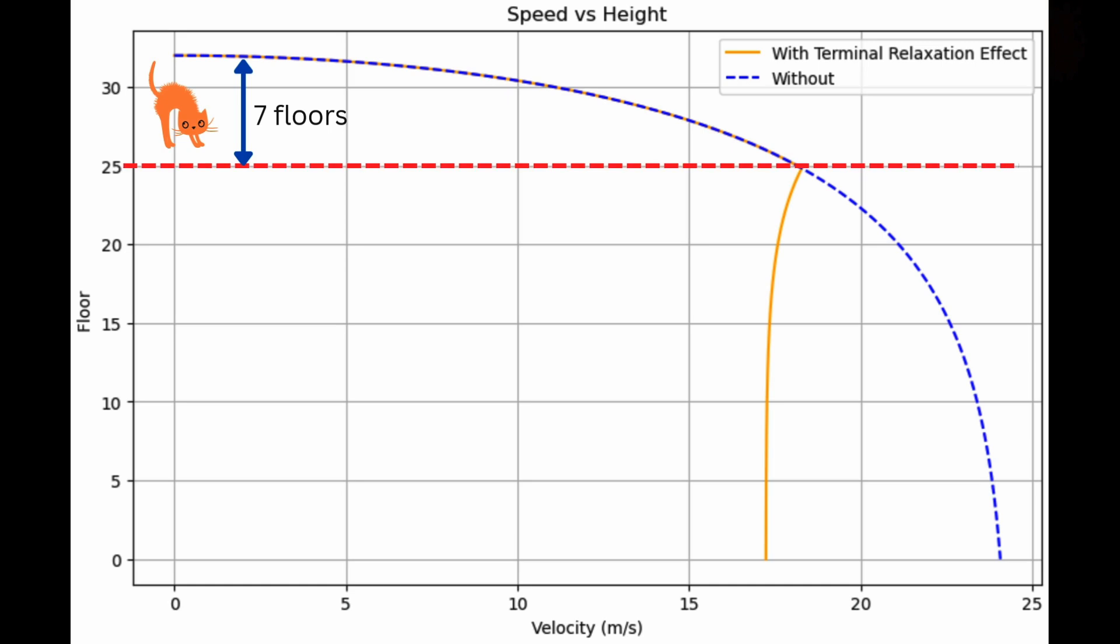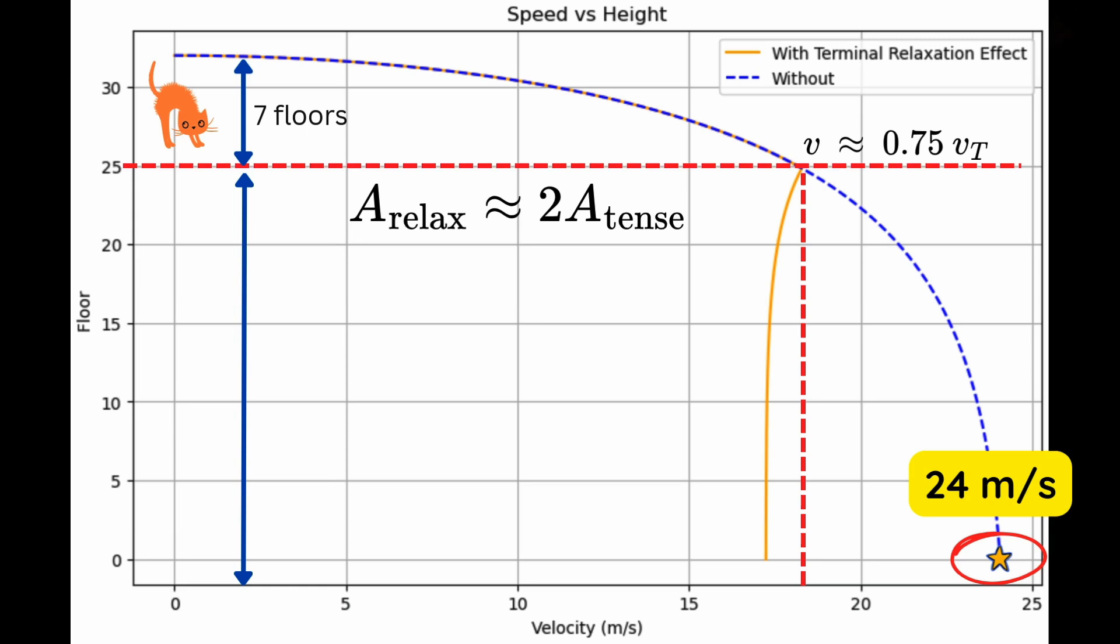Here's what we found: As the simulation unfolds, you can see a critical switch happens after the cat has fallen through about seven floors. When it hits about 75 percent of its terminal speed, it relaxes in response to this lower acceleration. At this point, the surface area goes up, practically doubling itself, and this seemingly simple action triggers a powerful shift in the physics of the fall. Without the relaxation effect, the tense cat continues accelerating until it reaches a terminal speed of about 24 meters per second—that's roughly 86 kilometers per hour, like speeding down a highway.